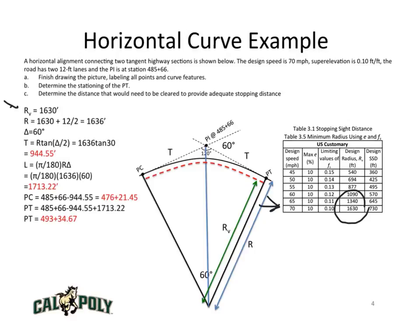We've listed R sub V here. That design curve is for the driver's eye. In our case, the actual radius of the center line is going to be 6 feet more. So we add 6 feet, which is the width of the lane over 2. 1,636 feet is the value of R.